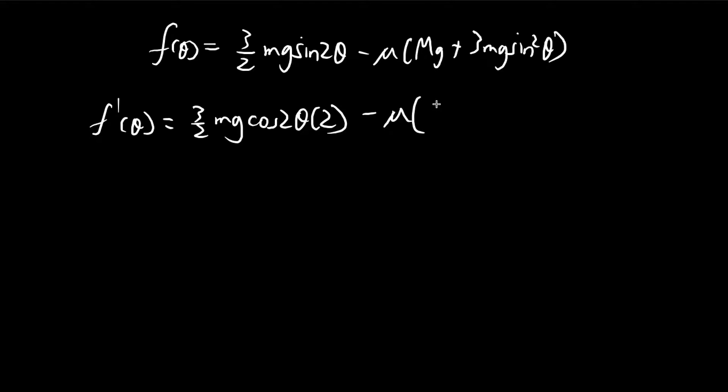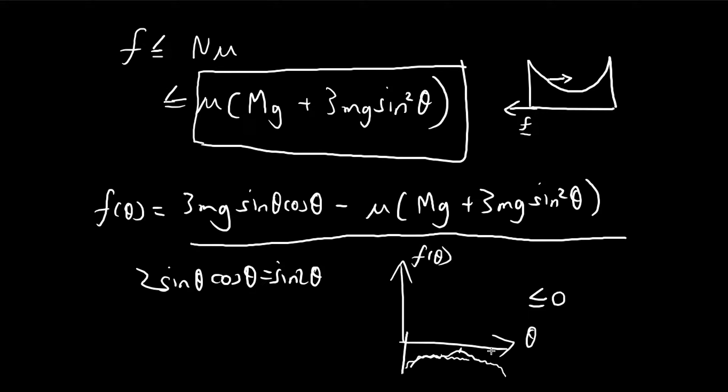So this is a constant, it goes away. So again, we use the chain rule 2 sine theta cosine theta. And then we let this be equal to zero, because that's when the maximum happens, that's when the derivative becomes zero.